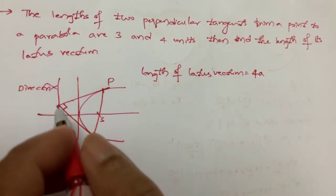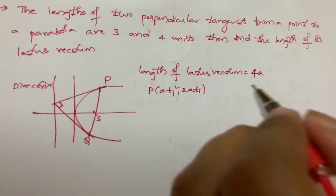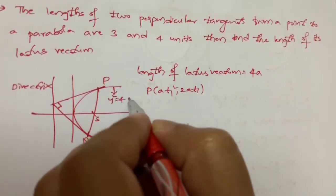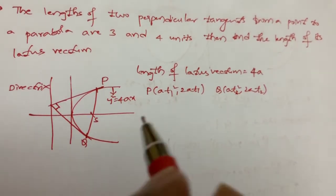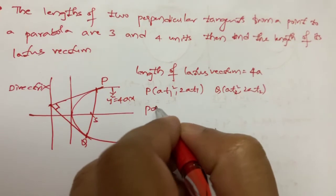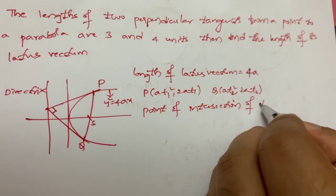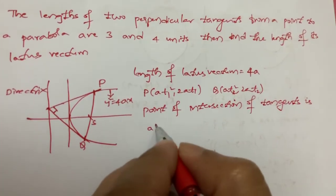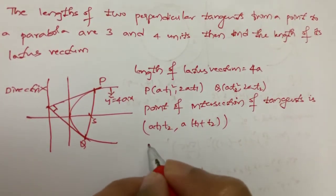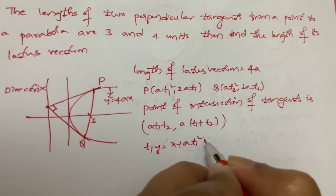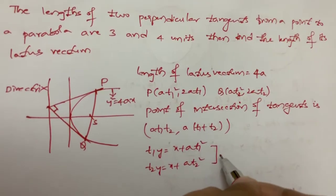I don't know the value of a, so what we do is consider P as (at₁², 2at₁) on the parabola y² = 4ax, and Q as (at₂², 2at₂). The point of intersection of the two tangents is (at₁t₂, a(t₁ + t₂)), obtained by solving the tangent equations: t₁y = x + at₁² and t₂y = x + at₂². Solving these two gives the intersection point.